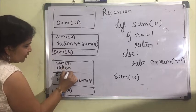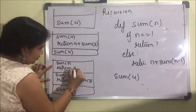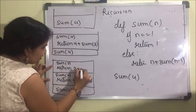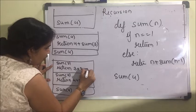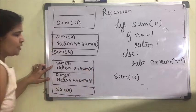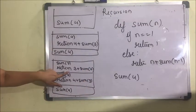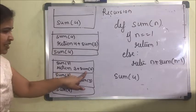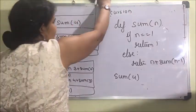So now again the function is called — it will call sum(2). So sum(3)'s frame returns 3 plus sum(2).